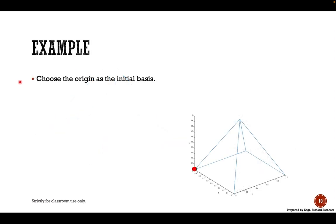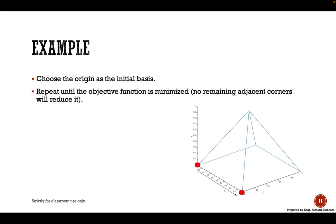We choose the origin as the initial basis, so we start at zero zero zero. Repeat until the objective function is minimized, so no remaining adjacent corners will reduce the function or the objective function.